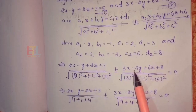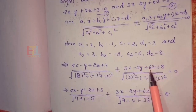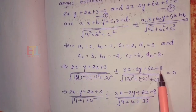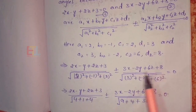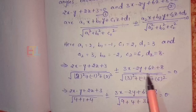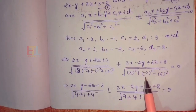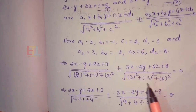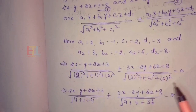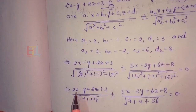A2 value is 3, B2 value is minus 2, C2 value is 6, D2 value is 8. Substituting: divided by root of (3² plus (−2)² plus 6²), equal to 0. After substituting values and simplifying: 2² is 4, (−1)² is 1, 2² is 4; and 3² is 9, 2² is 4, 6² is 36.